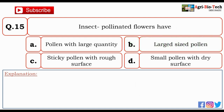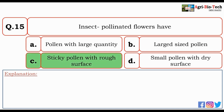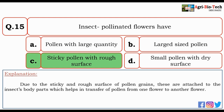Next question: insect-pollinated flowers have — pollen in large quantity, large-sized pollen, sticky pollen with rough surface, or small pollen with dry surface? The correct answer is C — sticky pollen with rough surface. Due to the sticky and rough surface of pollen grains, they attach to the insect's body parts, which helps transfer pollen from one flower to another.